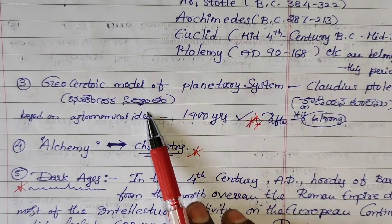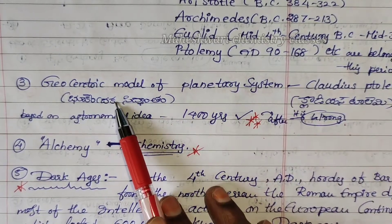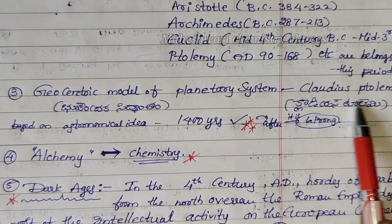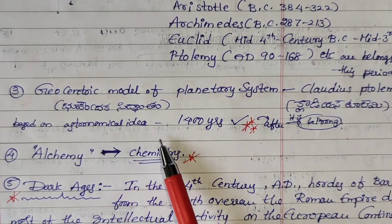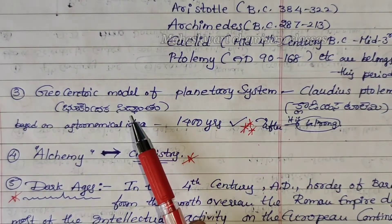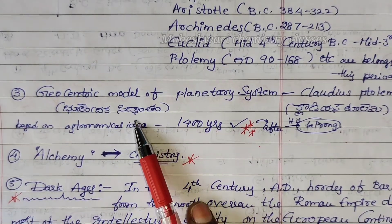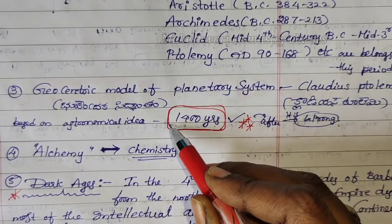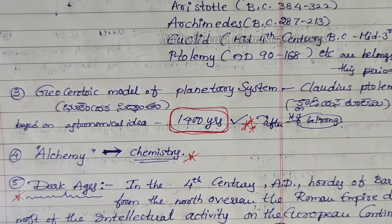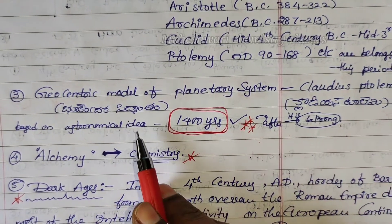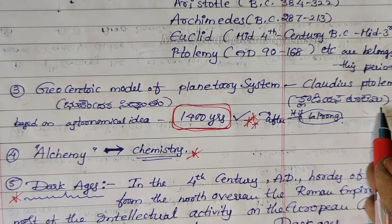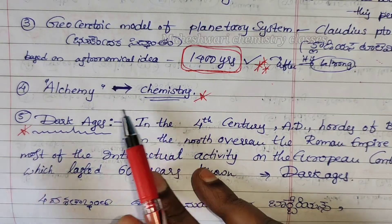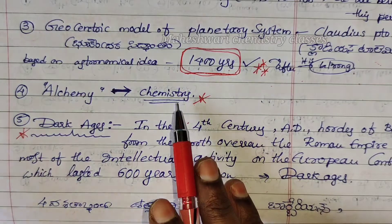The third point is the Geocentric Model of Planetary System, also called Bhu Kendra Siddhanta. This is associated with Ptolemy, also known as Claudius Ptolemy, based on astronomical ideas. This period also involved the development of physics, chemistry, and alchemy.